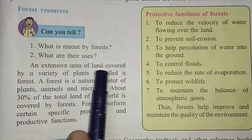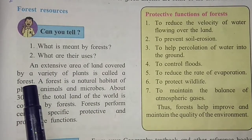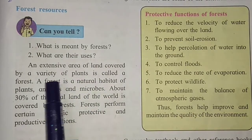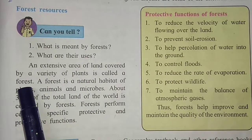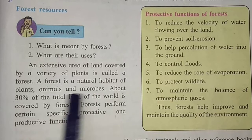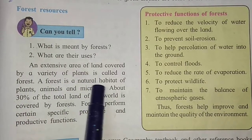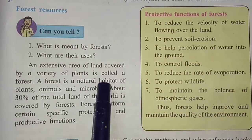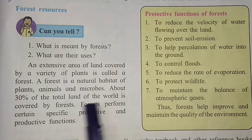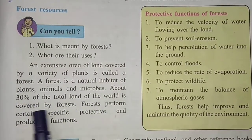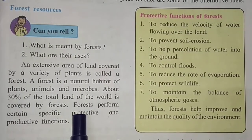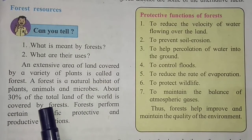An extensive area of land covered by a variety of plants is called a forest. This includes plant cover, animals, microbes, and any microorganisms. About 30 percent of the total land of the world is covered by forest. If we study the entire earth properly, near about 30 percent of the lithosphere is covered with forest.